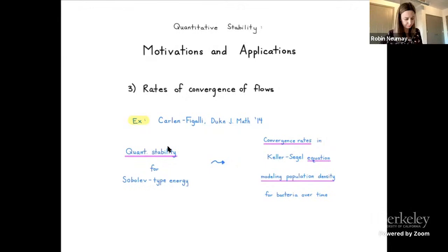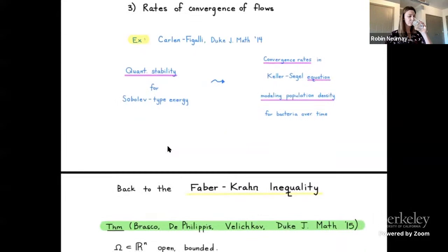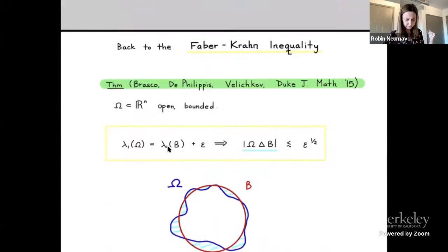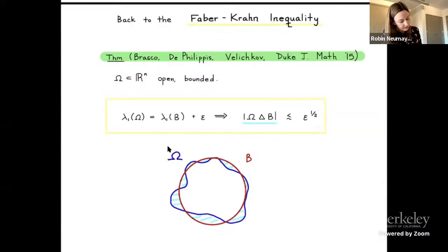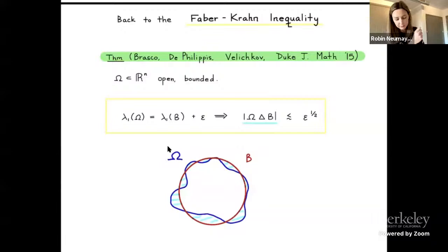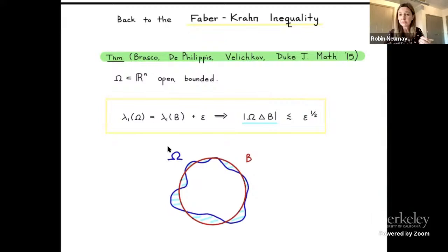Let's return to the Faber-Krahn inequality. In 2015, a very nice quantitative stability estimate was proven by Brasco, De Philippis, and Velichkov. It says: if you take any bounded open domain omega in Euclidean space, and the first eigenvalue equals the first eigenvalue of a ball of the same volume plus epsilon, then the volume of the symmetric difference—the points in one set but not the other—is at most of order epsilon to the power one-half. And this power of one-half is in fact optimal. In terms of the energy profile picture, this corresponds to quadratic energy growth away from the class of minimizers.